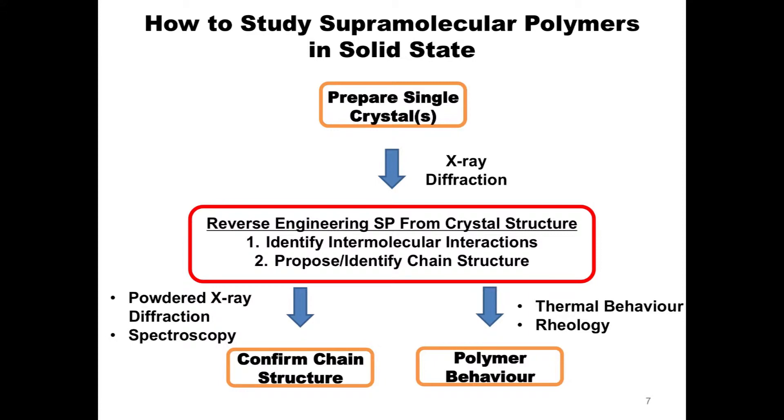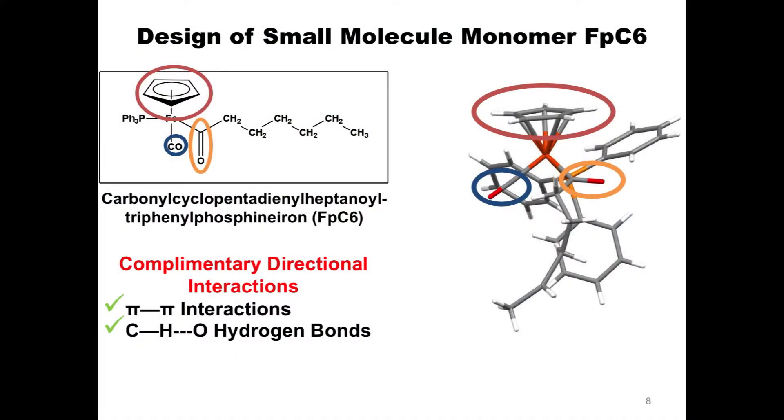So now I'm going to talk a little bit about the design that goes into one of the small molecule monomers that I've been working on for the last couple of years. And it's drawn up here, and it has a really long name. It's called carbonyl cyclopentadienyl heptanoyl triphenylphosphine iron, and I'm just going to refer to that as FPC6. So when we look at this, we don't immediately see any complementary directional interactions. But we were able to get a series of different crystal structures, and we're able to identify three interactions. The first of which comes from the cyclopentadienyl group circled in red. This is going to give us a pi-pi interaction.